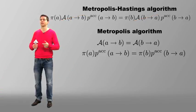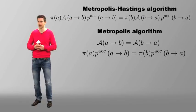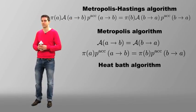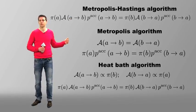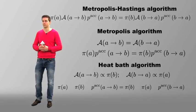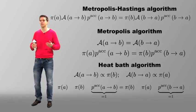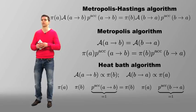In contrast, in the general detailed balance condition for the heat bath algorithm, we have A of A to B proportional to pi of B, so that it is now the acceptance probabilities that drop out of the picture.